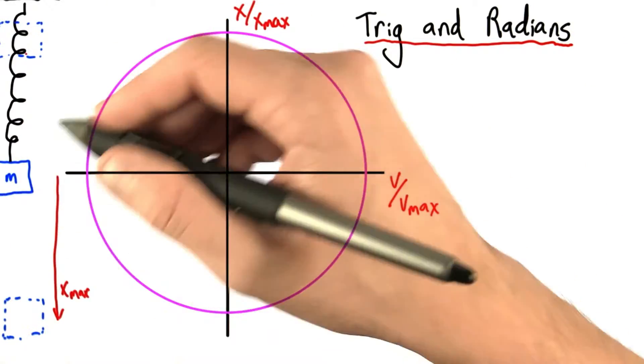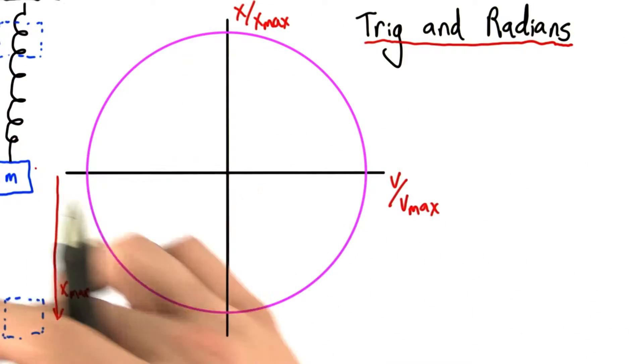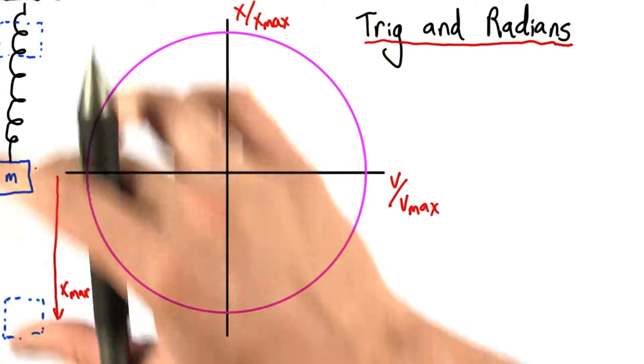Now let's go back to our mass bouncing up and down on a spring. You'll notice I've changed it from being a horizontally sliding mass to a vertical one.